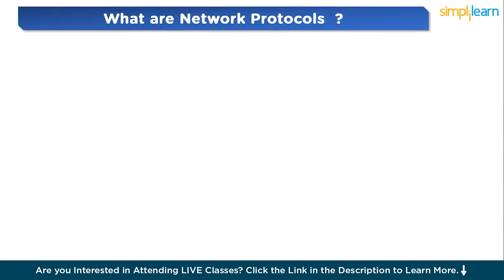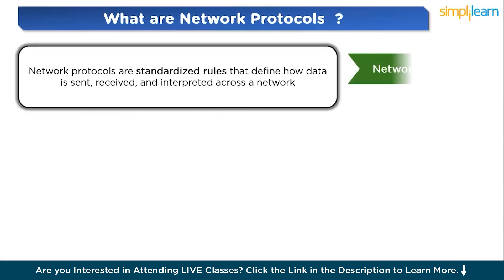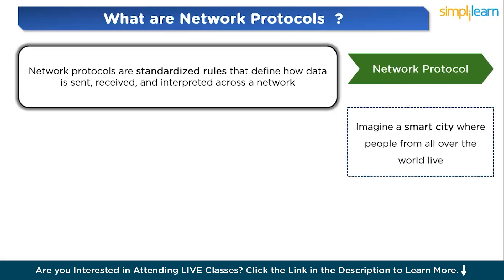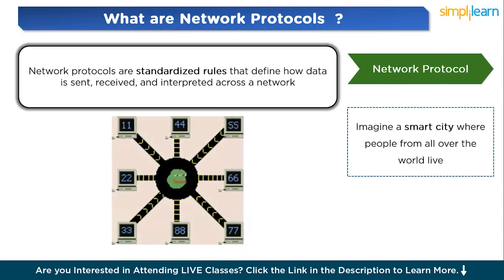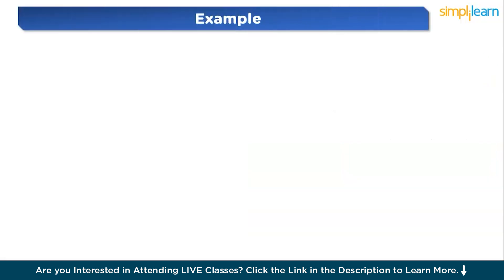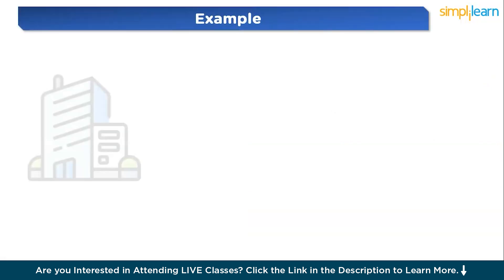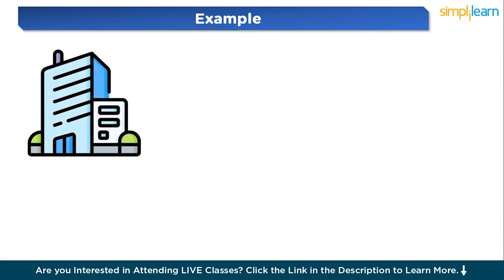Network protocols are standardized rules that define how data is sent, received, and interpreted across the network. They function as a common language that enables devices — ranging from computers to IoT gadgets — to communicate efficiently while maintaining security and accuracy. Let's take an analogy of a smart city: imagine a smart city where people from all over the world live, and each citizen speaks a different language.